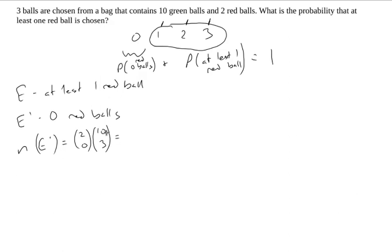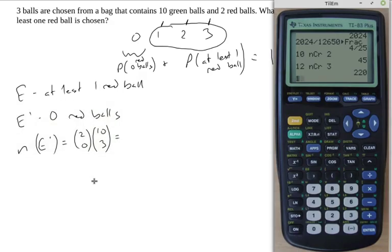This will give me ten choose three. Two choose zero is just one, so all I care about is the ten choose three. I'm actually going to just copy this previous line and change this to ten choose three to get 120.